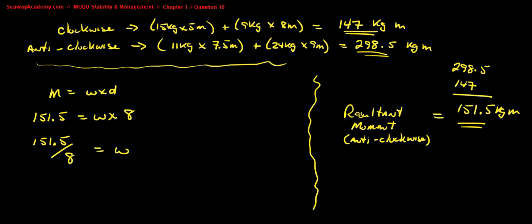So we cross multiply, 151.5 divided by 8. So the weight is going to be 18.94 kg. This is the weight to be placed on the beam to obtain equilibrium.